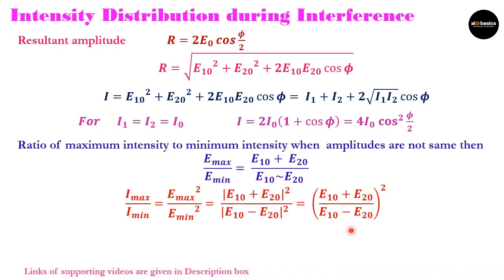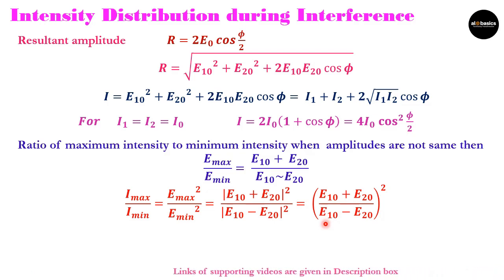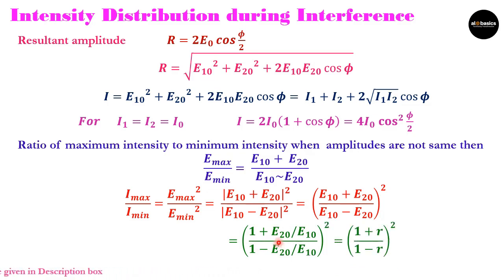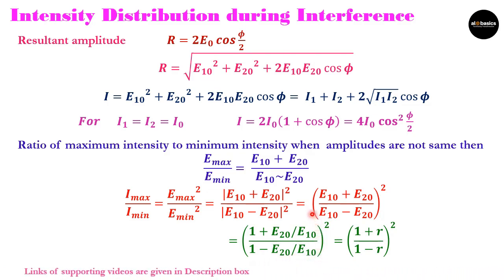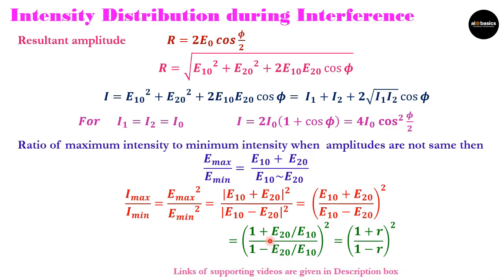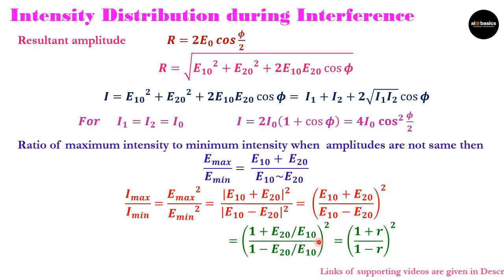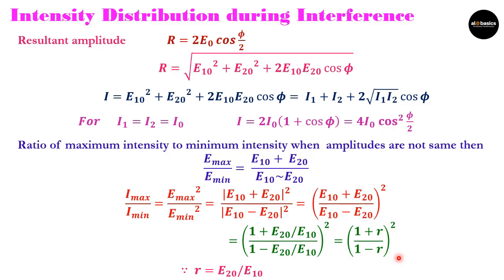We can further simplify by taking E10 common from numerator and denominator, giving [(1 + E20/E10) / (1 − E20/E10)]². Setting r = E20/E10, the expression becomes Imax / Imin = [(1 + r) / (1 − r)]². This formula makes calculations very easy and is essential for solving numericals.